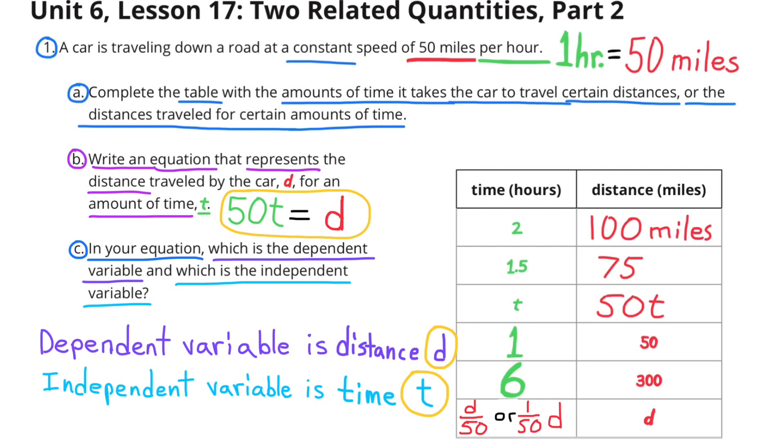Part C. In your equation, which is the dependent variable, and which is the independent variable? We have to look at the equation that I wrote: 50T equals D, or 50 times T equals D. The value for D depends on the value of T, or what we're multiplying by T. Another way to look at it is, the distance that the car will travel depends on how many hours you're driving. So the distance depends on the time. The distance would be the dependent variable, or D, and the independent variable would be time, or T.